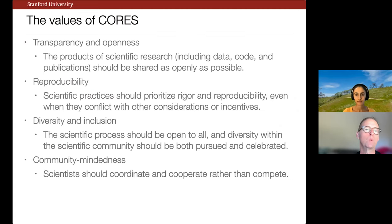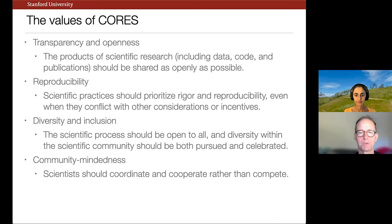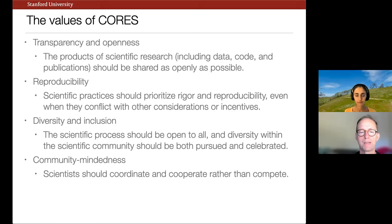We have a set of values we've tried to follow in everything we do. These include transparency and openness — we think everything should be shared as openly as possible. Reproducibility — we need to prioritize rigor and reproducibility even when it conflicts with other incentives. Diversity and inclusion — we want the process open to all and our community as broad as possible. And community-mindedness — science should not be a competitive sport; it should be a game in which we all cooperate and coordinate.